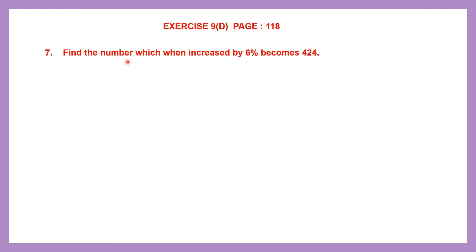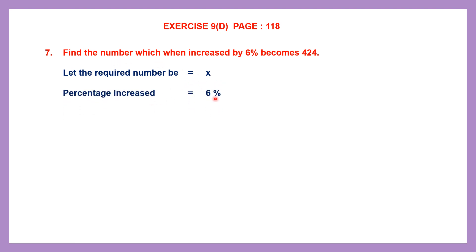We need to find this number, and when it is increased by 6%, that means when you add 6% to this number, it becomes 424. So let the required number be x. The percentage increase is 6%, which means 6% of x has been increased.